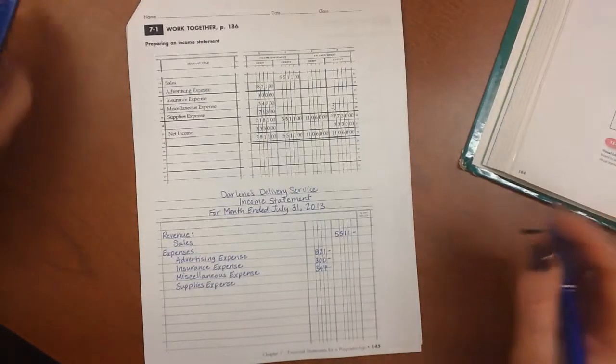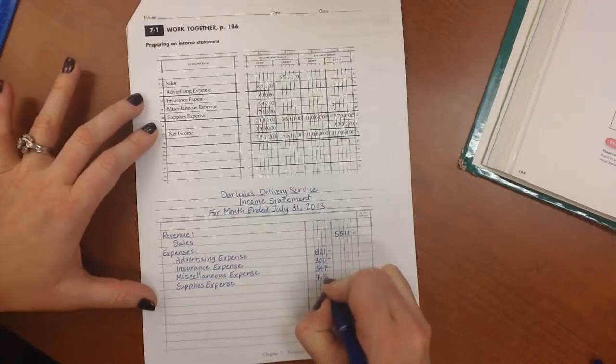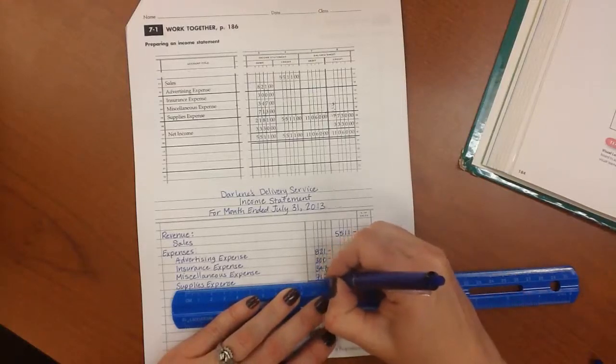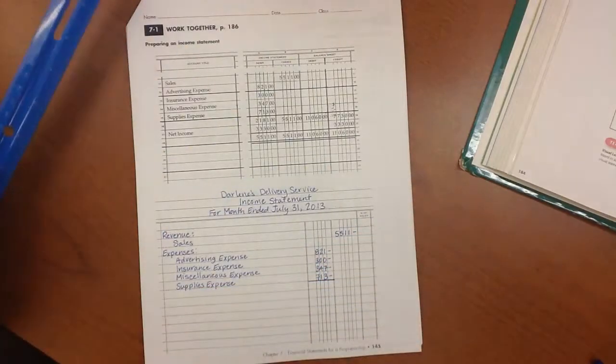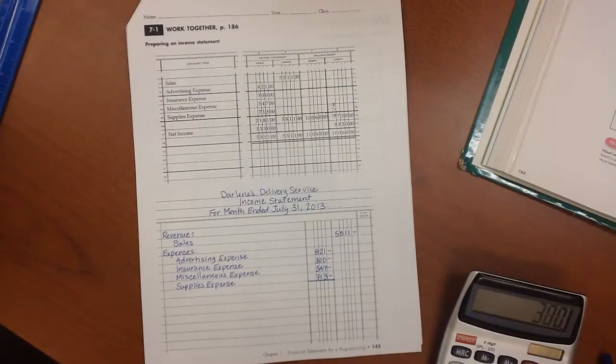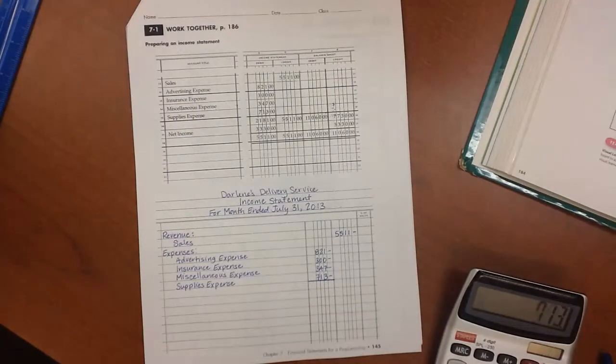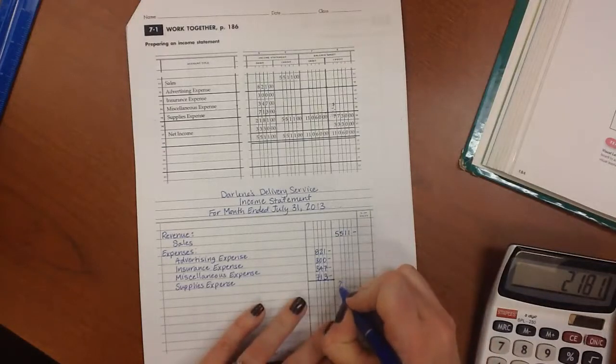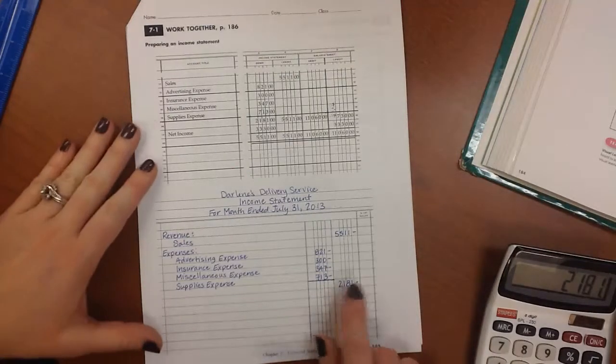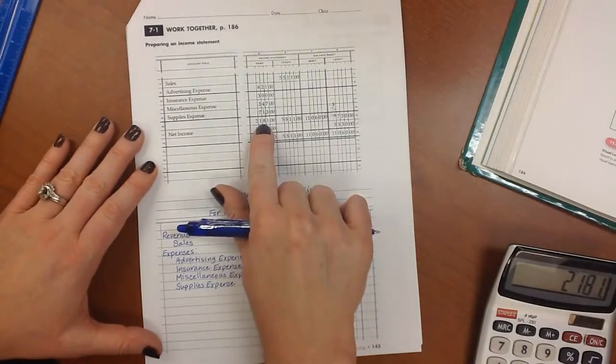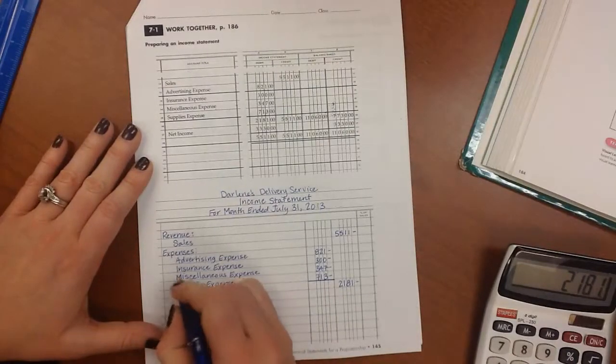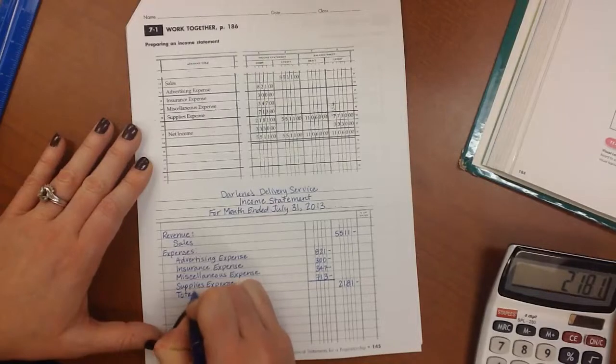All right, once we've written all of them down, I need to put this last amount in here, 713, then we're going to draw a single line underneath this first column, and we're going to total those numbers using our calculator. And our total is going to go in the next column over. Now notice this total does match the total that is right here at the bottom of this income statement column, but you always want to double check your math to make sure you didn't record something wrong. Now on this line, we are going to write total expenses.